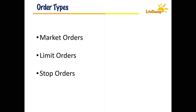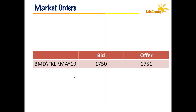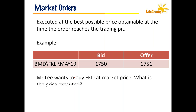Let's look at order types. There are three types: market orders, limit orders, and stop orders. For market orders — if the FKLI May contract has a bid price of 1750 and an offer price of 1751, and Mr. Lee wants to buy at market price, what price will be executed? The answer is 1751 — the offer price — because he wants to buy immediately at whatever the market offers, not waiting in the queue.